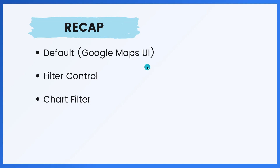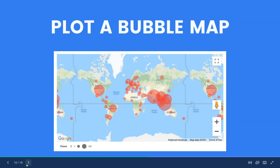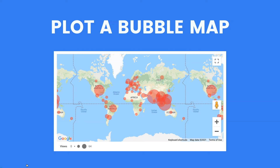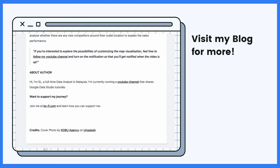So in summary, today we have learned three methods on how to zoom in or out of Google Maps charts in Data Studio. It just takes a few additional steps to make the most out of the Google Maps chart. In case you missed last week's tutorial on how to plot a bubble map using latitude and longitude data in Data Studio, I'll put the link up here so you can watch it.